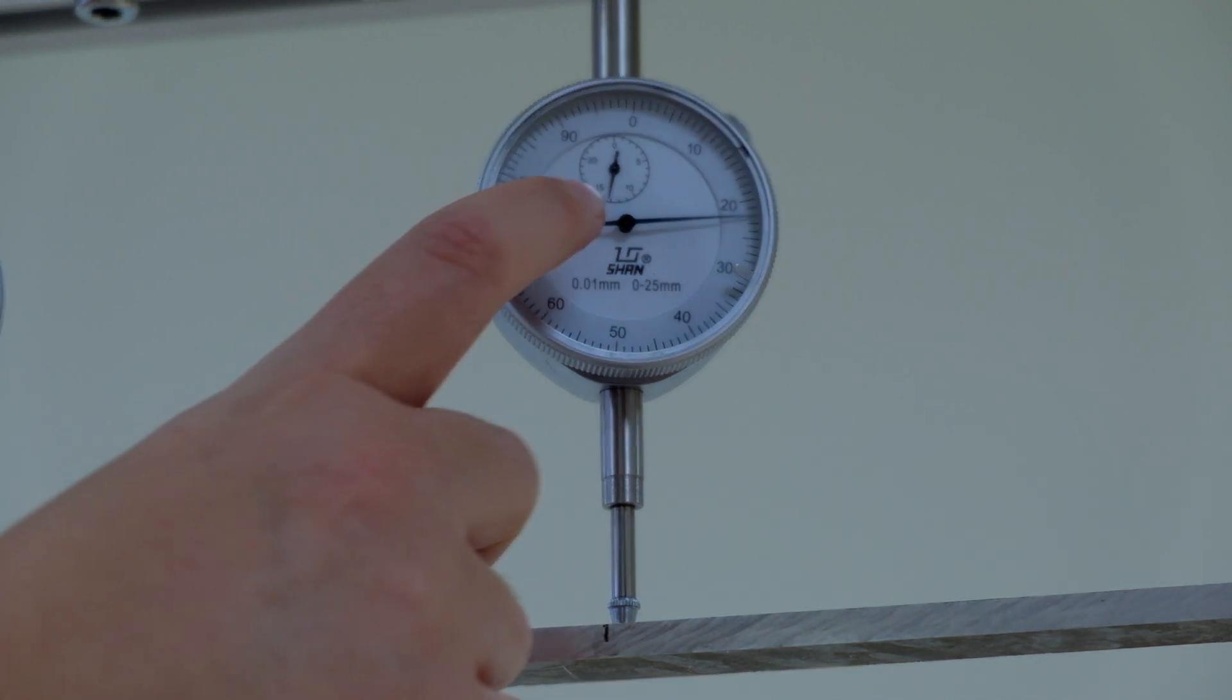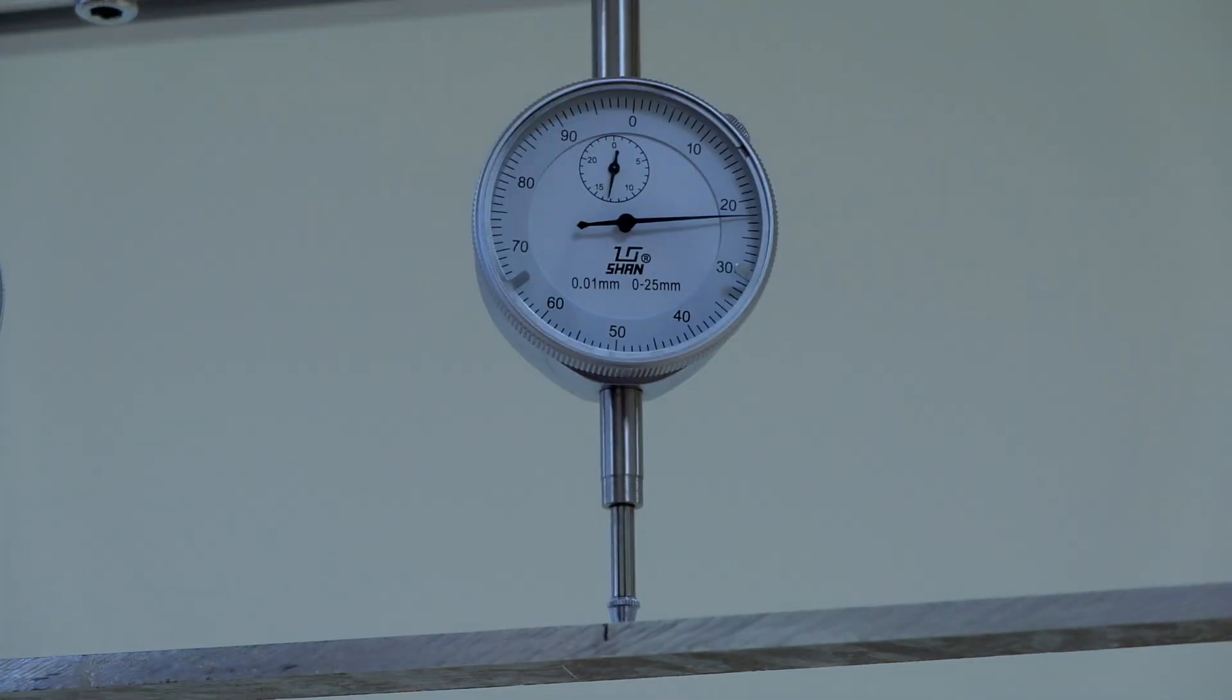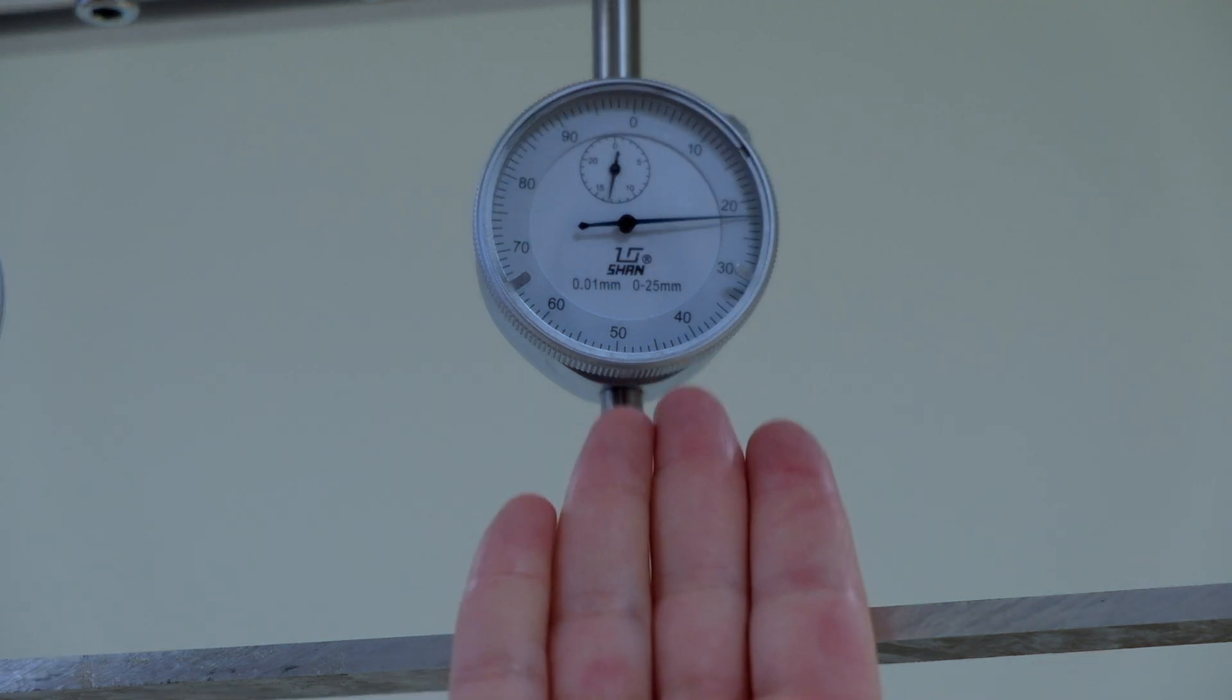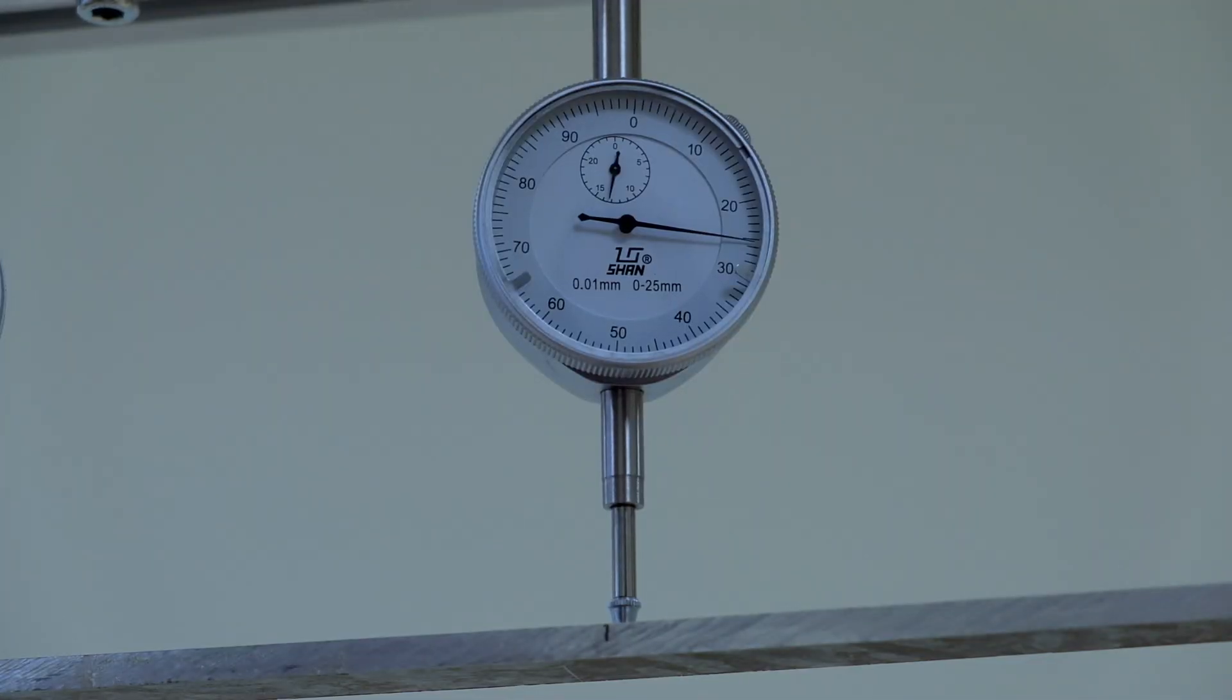Now, the smaller dial that you see here inside gives you the millimeter. For instance, this reading right here is 13 point something millimeters. And to get that something, we look at the larger dial,